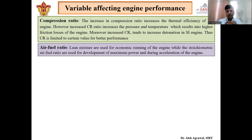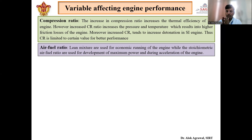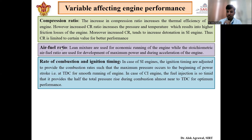Next is air-fuel ratio. We have three types: stoichiometric, in which the exact amount of air is supplied with a given fuel so that complete burning of fuel takes place; lean mixture, where the quantity of air is more; and rich mixture, where the quantity of air is less than required. For economic running we supply lean mixture so that less fuel goes into the combustion chamber, and for maximum power or acceleration we use rich mixture.